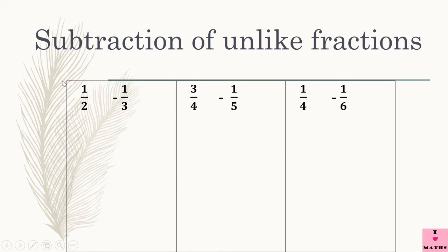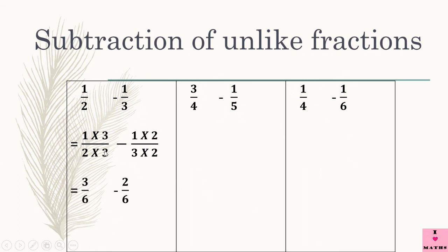These are unlike fractions. So let us multiply the numerator of 1 upon 2 by 3, and we will multiply the numerator of 1 upon 3 by 2. So 1 multiplied by 3 and 2 multiplied by 3, minus 1 multiplied by 2 and 3 multiplied by 2. 1 threes are 3 and 2 threes are 6. 1 twos are 2 and 3 twos are 6. So we have 3 upon 6 minus 2 upon 6. 3 minus 2 is 1, and the answer is 1 upon 6.